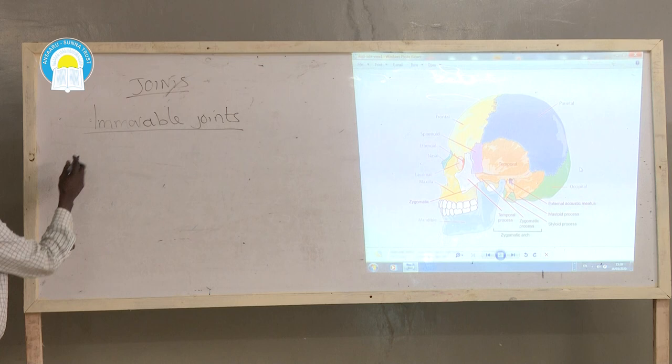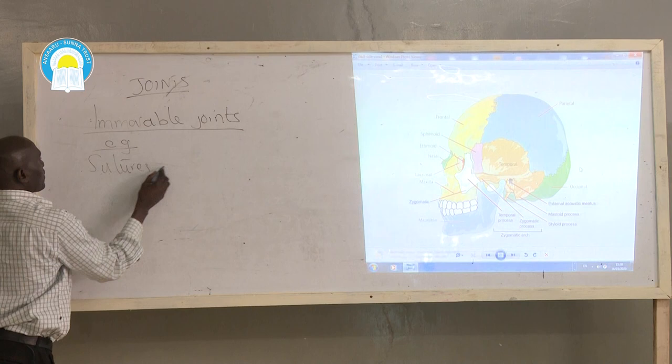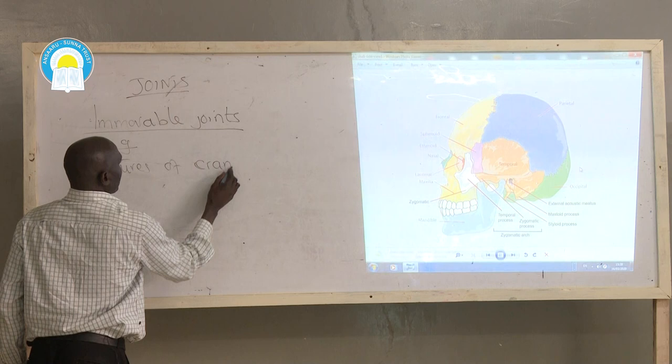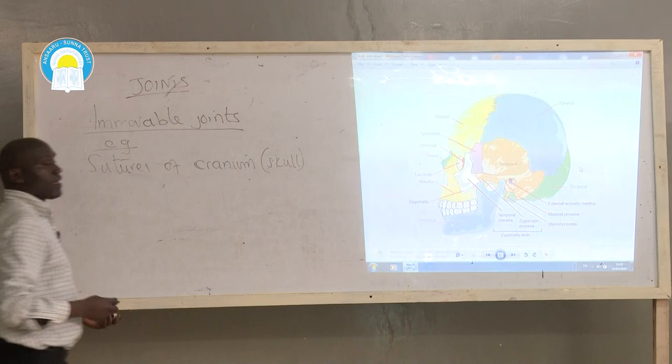So, immovable joints — for example, sutures of the cranium or skull.